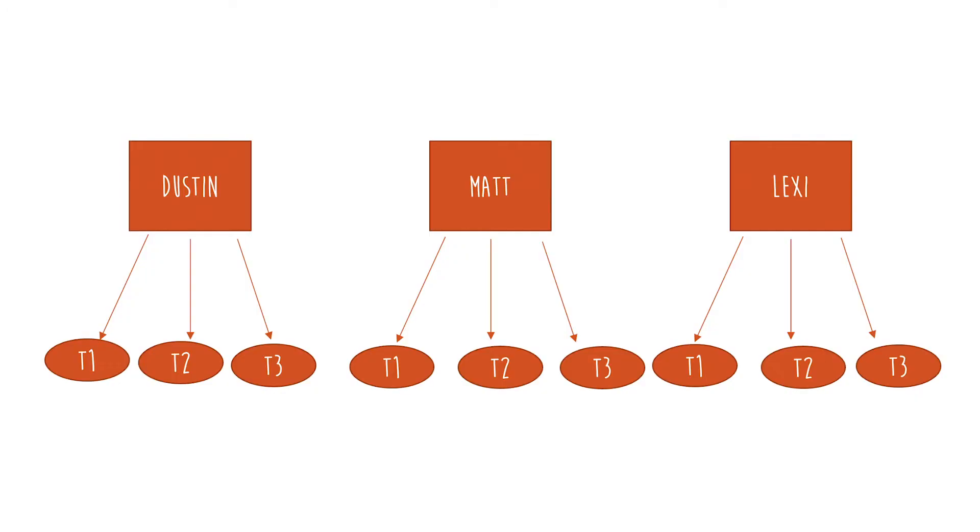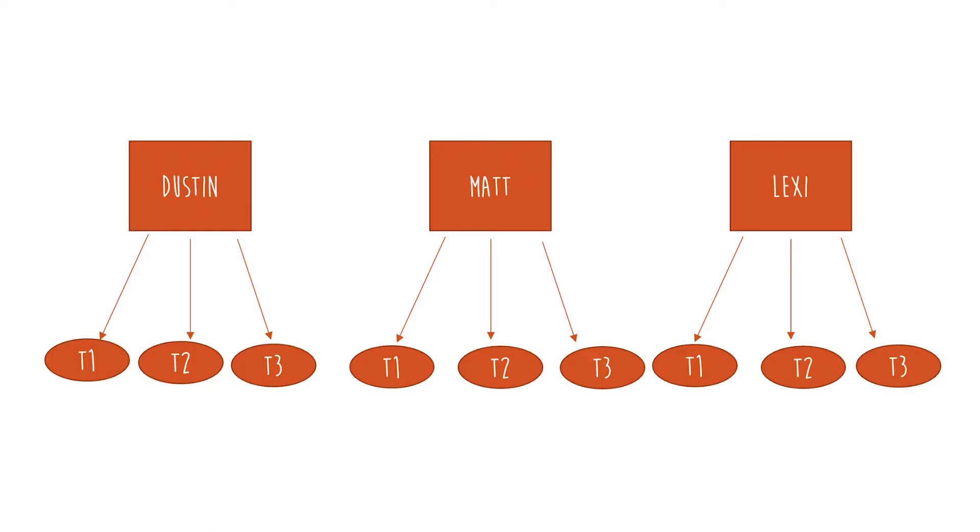Here's an example where we have Dustin, Matt, and Lexi each measured three times — time one, time two, time three. Any time you collect multiple measurements from the same person, you can't treat those as independent. Otherwise you're going to screw something up. Not only can you inflate your sample size, but you can also be misled in pretty dramatic ways.